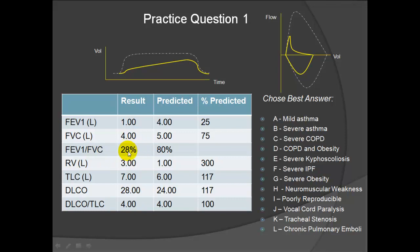Question one: FEV1 is critically low at 25%, showing severe obstruction. Residual volume is quite high, showing severe air trapping and an elevated TLC. So this is a severe obstructive lung disease with air trapping. A normal diffusion capacity matches B, severe asthma, the best. Severe COPD would have a low diffusion capacity.